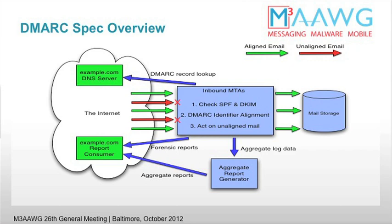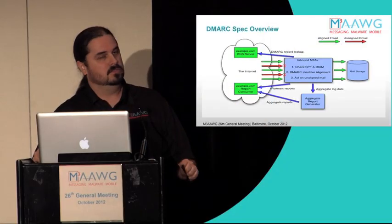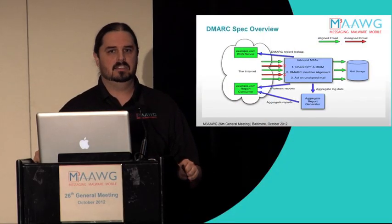You have the big cloud labeled the Internet, where all good and bad email comes from. The arrows coming into the box in the center are aligned and unaligned mail — the green is aligned mail and the red is unaligned mail. Aligned and unaligned are terms you're going to hear a lot in this training session; it's a core DMARC concept. What DMARC is testing for is: is that email aligned or not?